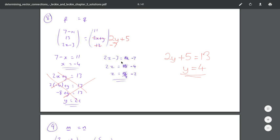And 2z minus 3 equals negative 7. So add 3 to both sides for 2z equals negative 4, and then divide through by 2 to get z equals negative 2.